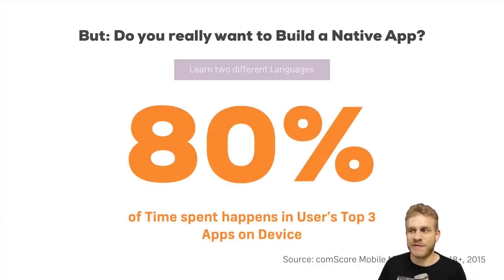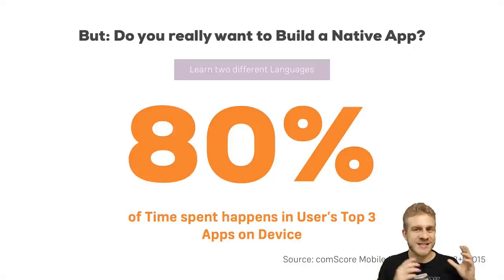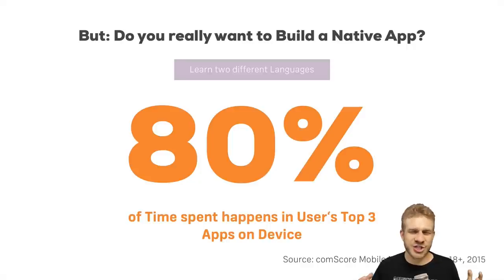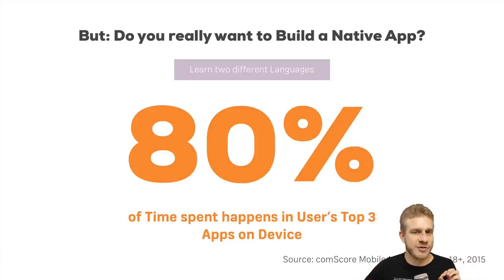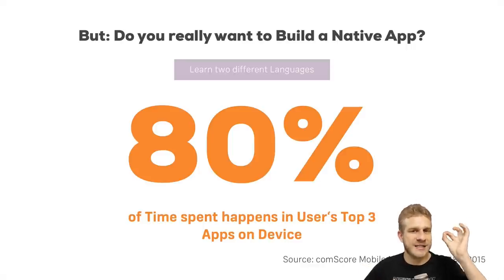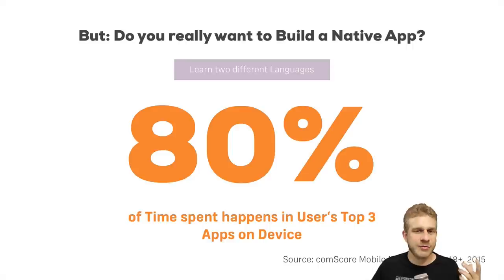The better argument is this number: even though the majority of users use native apps, 80% of the time goes into the top three apps — which unfortunately probably isn't your app. It's most likely Google, Facebook, WhatsApp, something like that. There's very little time to spare for other apps. And here's another figure: how many new apps does the average user install per month? Zero. Absolutely zero. The average user doesn't install a new app. You install apps when you get a new phone, but thereafter you rarely add new ones.